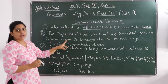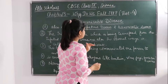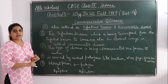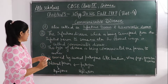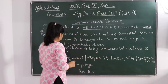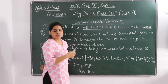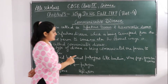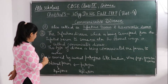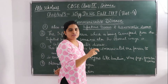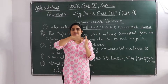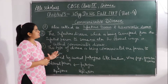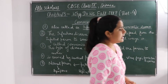To summarize: communicable disease is also called infectious disease or transmissible disease. It is caused by several pathogens — bacteria, viruses, fungi, and worms. Once a pathogen enters a normal person's body, it replicates and the person shows some signs and symptoms of infection.